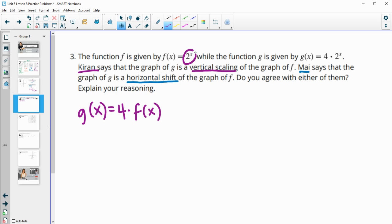times the original function. So f of x is 2 to the x, g of x is just 4 times f of x. So this is definitely a vertical scale by a factor of 4. So definitely agree with Kyron.